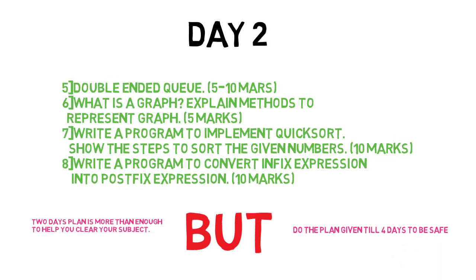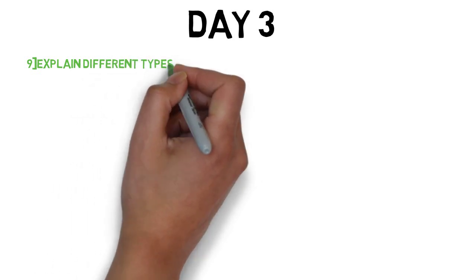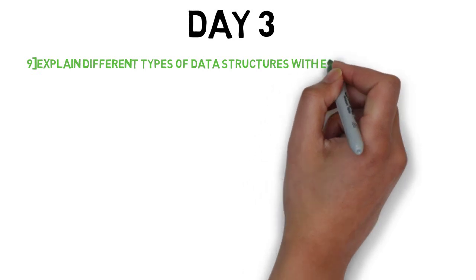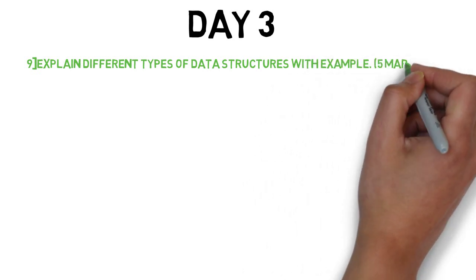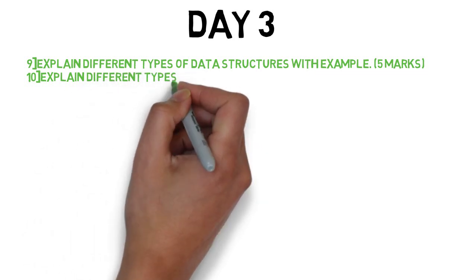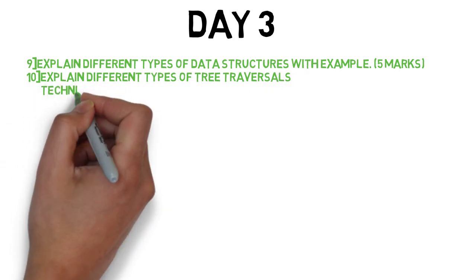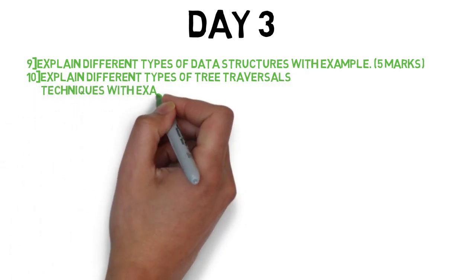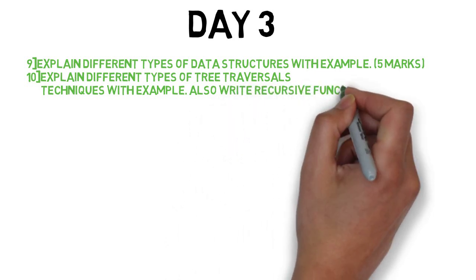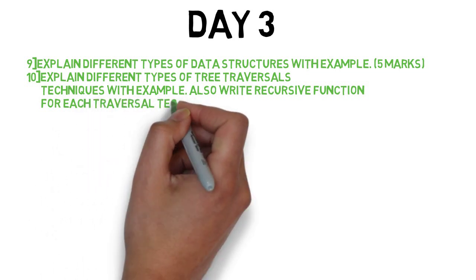Day 3 plan. The ninth question is: explain different types of data structures with examples — this is a 5-mark question. The tenth question is: explain different types of tree traversal techniques with examples and write recursive functions for each traversal technique. There are three types of tree traversal techniques. Recursive functions are very easy and can fetch 5 to 10 marks.